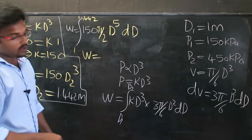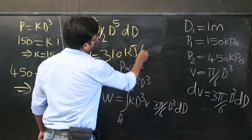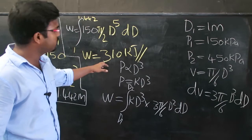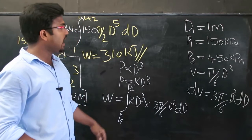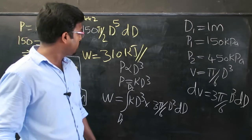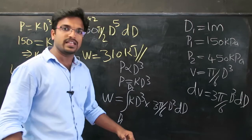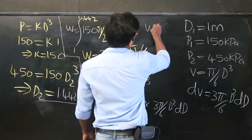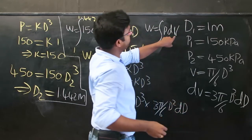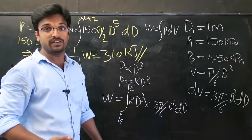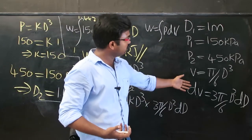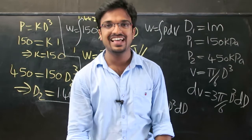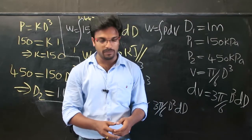Evaluating this integration from 1 to 1.442 gives an answer of approximately 310 kJ, with minor numerical deviation possible. The key to solving this problem was using the relation P ∝ D³ along with the known V–D relationship for a sphere to express the entire integrand in terms of diameter. In the next video, we will cover heat transfer.